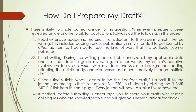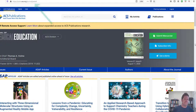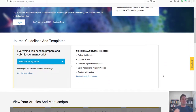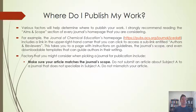Where do I publish my work? Various factors will help determine where to publish. I strongly recommend reading the aims and scope section of every journal's homepage that you are considering. For example, the Journal of Chemical Education's homepage includes a link in the upper right-hand corner to access a sublink entitled Authors and Reviewers, which takes you to a page with instructions on guidelines, the journal's scope, and even downloadable templates. Factors to consider when picking a journal include making sure your article matches the journal's scope — do not submit an article about subject A to a journal that does not specialize in subject A. Do not mismatch your article.